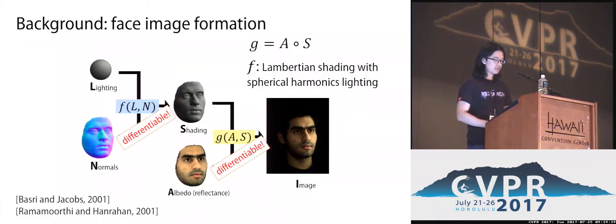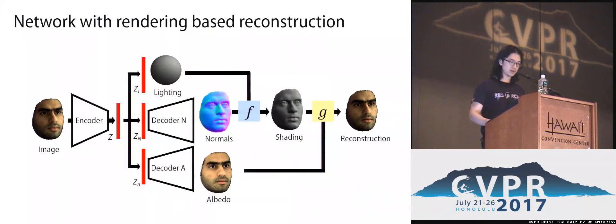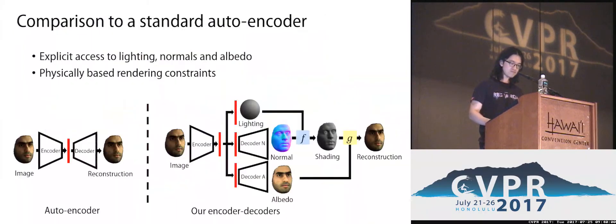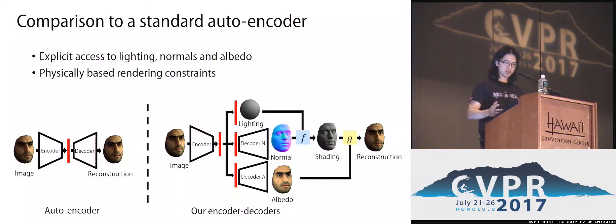Both of these functions are differentiable, so we can place them in a neural network and train using gradient descent. With these rendering modules, the decoding process of our network implements the face-rendering pipeline. Compared to a standard auto-encoder, our network provides explicit access to the normals, albedo, and lighting — the elements that render the face — each corresponding to a disentangled latent representation in the bottleneck. The reconstruction is physically constrained by the rendering functions.